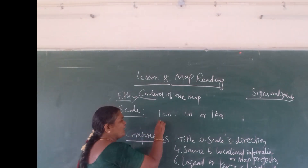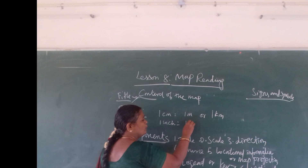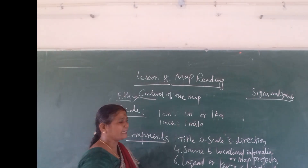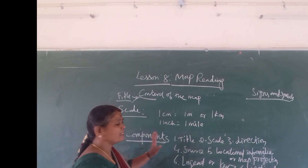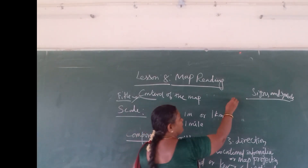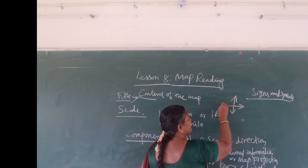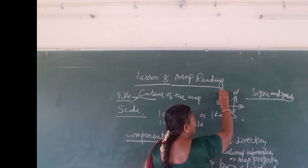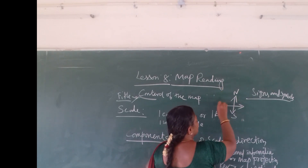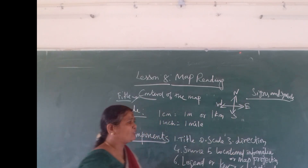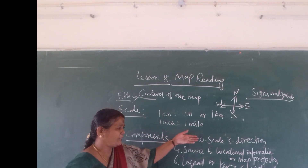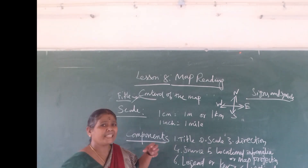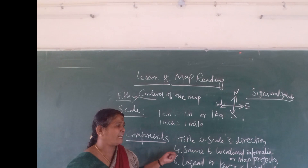For example, one inch is equal to one mile — that means one inch on the map represents one mile on the actual ground. The third component is direction. In the map, direction is shown as north, south, west, and east. Usually this direction is useful so that the map shows information from any orientation — whether it is for navigation or any department — confirming whether information is accurate.